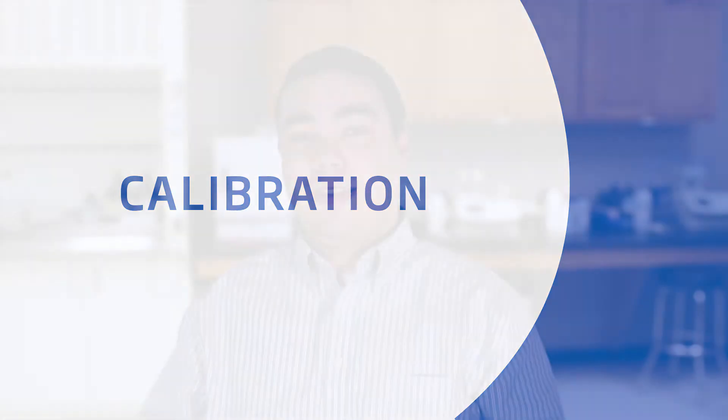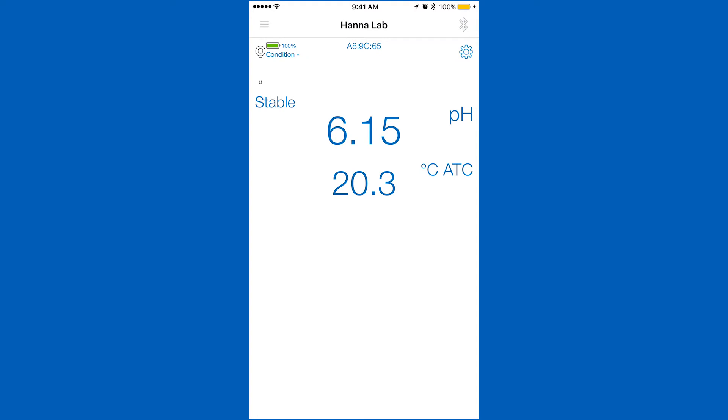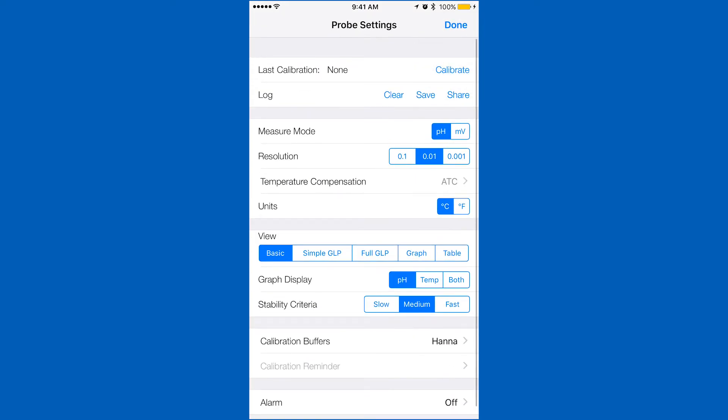Calibration is an important part of keeping your Halo operating at its best. We recommend calibrating before each use. To calibrate your Halo pH meter, go into the settings menu. Tap calibrate and you will be taken to the calibration screen.